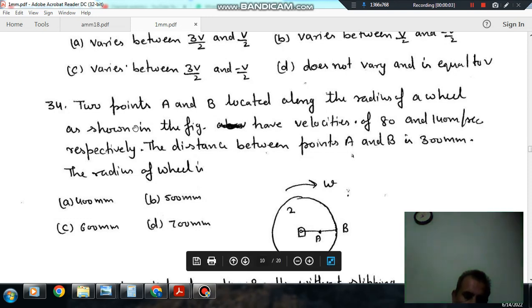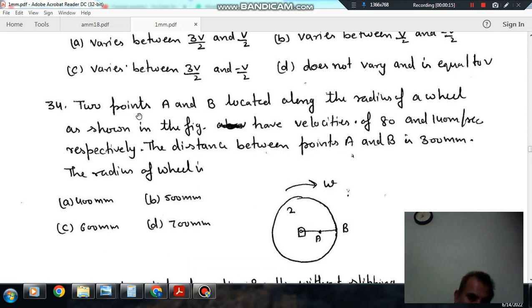Hello, welcome again. We are solving some questions on theory of machines. The topic is velocity, displacement and acceleration of planar mechanisms. Question number 34: Two points A and B are located along the radius